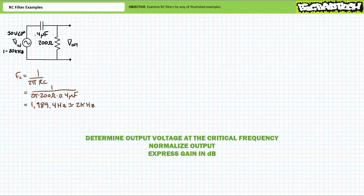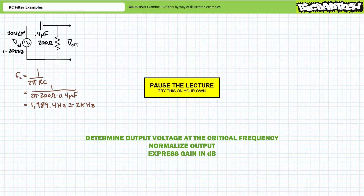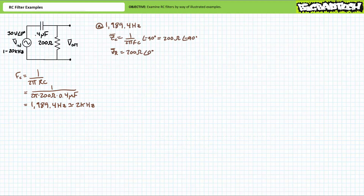Next, see if you can determine the output voltage at the critical frequency. Once you've got this property, normalize the output and see if you can express a gain figure in units of decibels. By all means pause the lecture and try this on your own. At the critical frequency, the complex impedance of the capacitor will be 200 ohms at an angle of negative 90 degrees. The complex impedance of the 200 ohm resistor is 200 ohms at an angle of zero degrees.